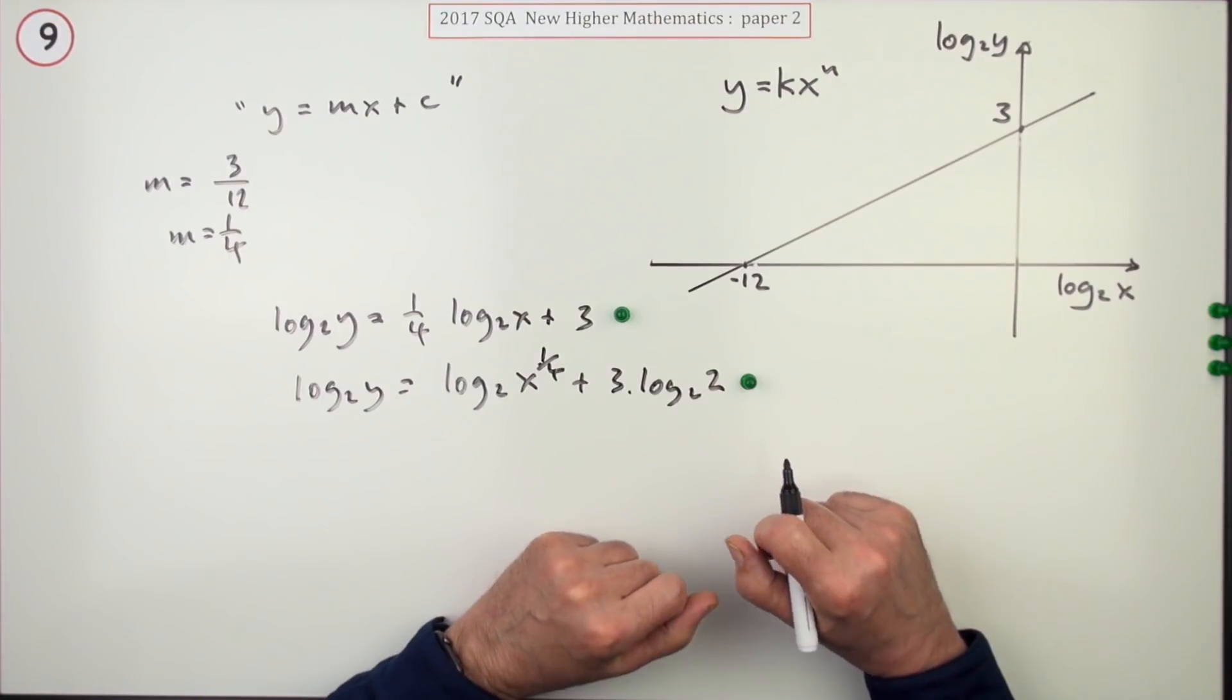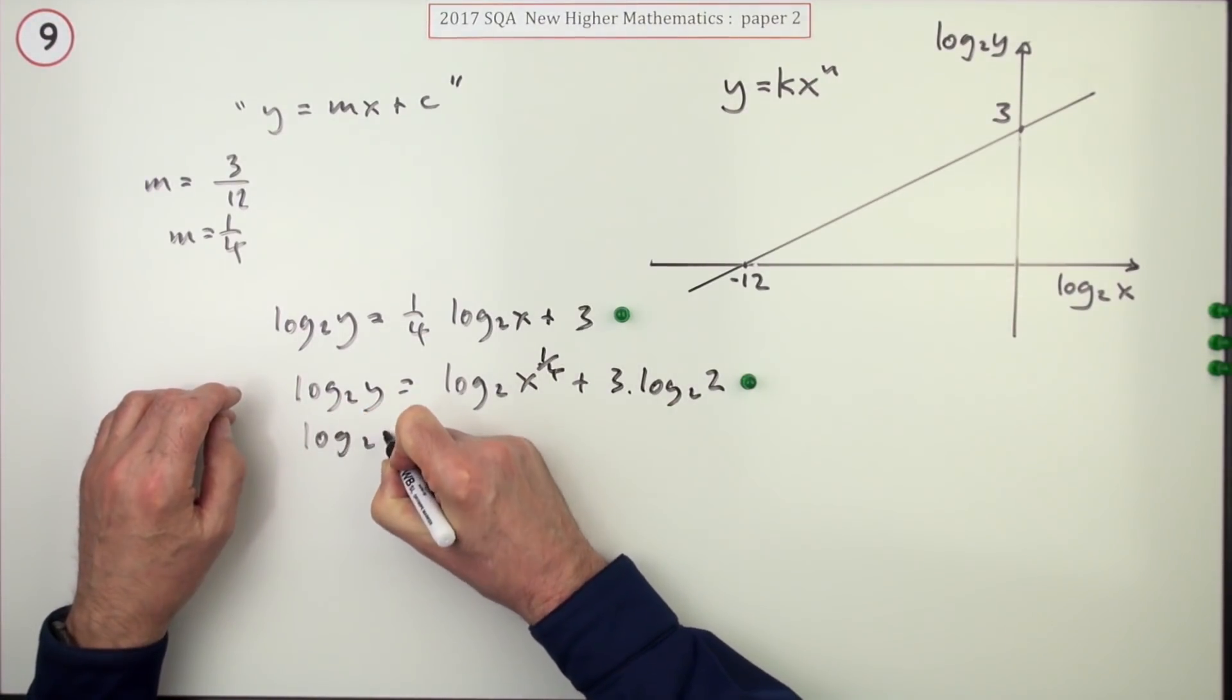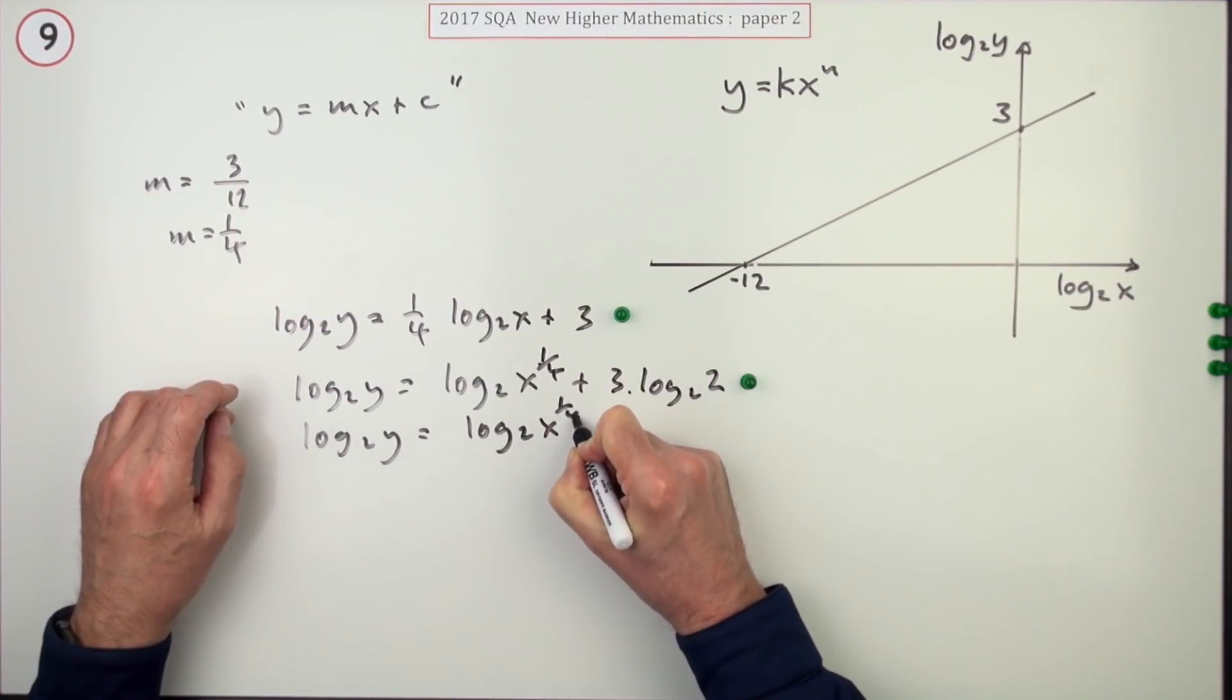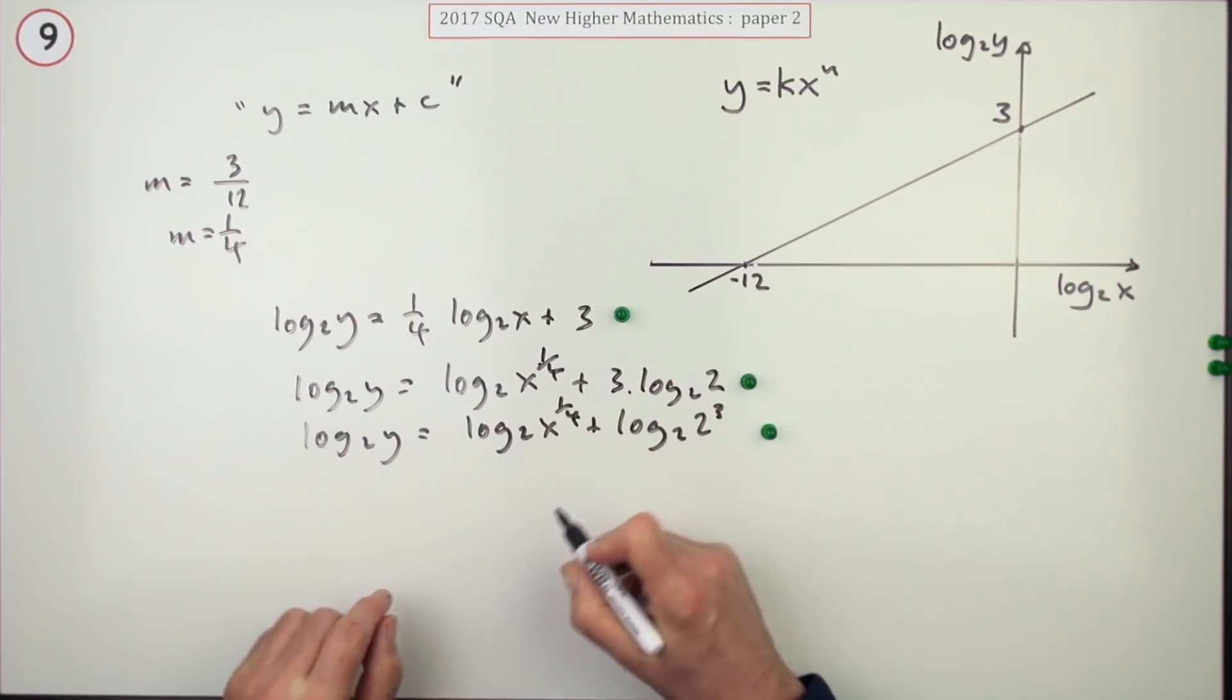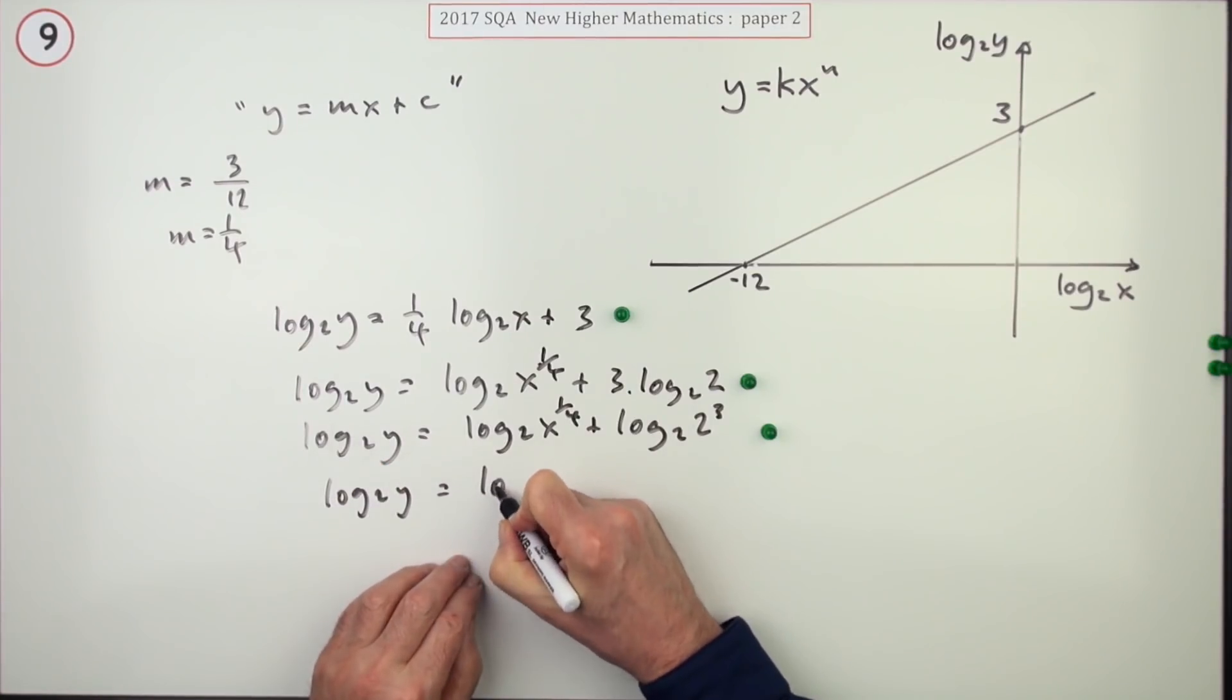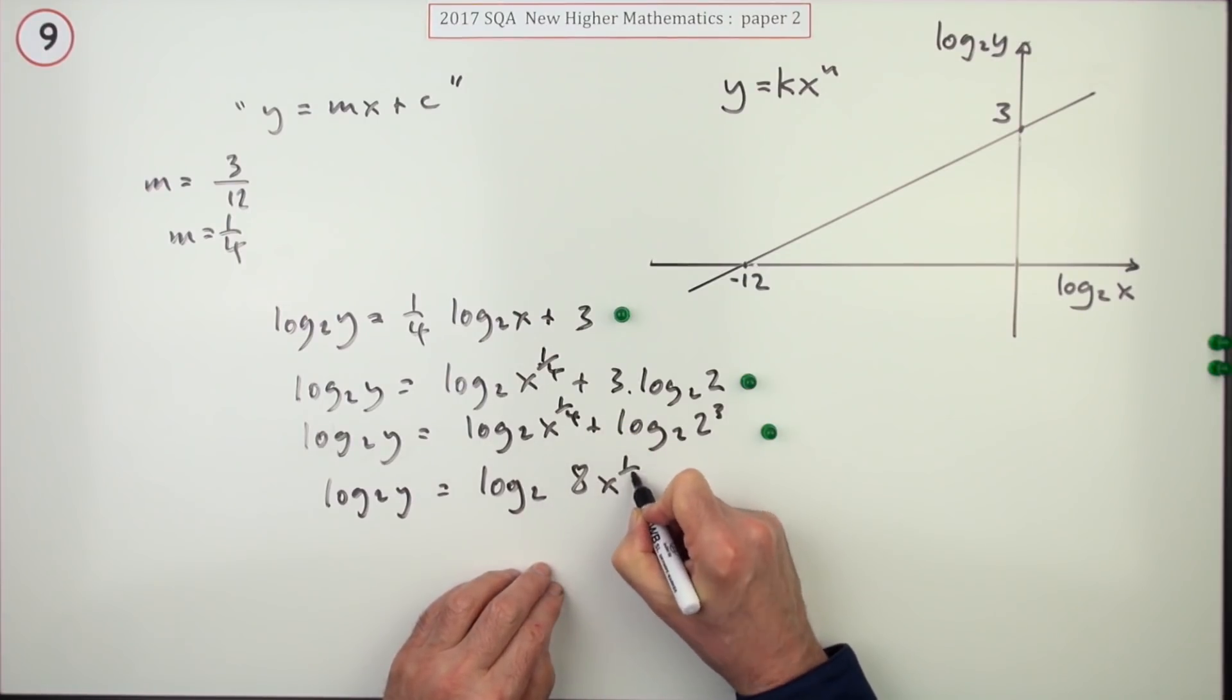So log base 2 of Y is log base 2 of X to the quarter plus log base 2 of 2 to the power 3. That's down as the third mark. Now just gather them together: log base 2 of Y is log base 2 of that's 8 times X to the power 1 quarter. That's the next mark.